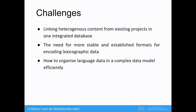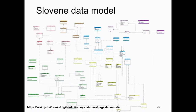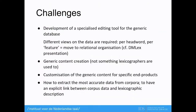It also raises the question of how to organize language data in a complex data model efficiently. Just to give you an idea of the complexity of such a model — this is the model of the Slovene digital dictionary database. It's completely unreadable. And related to that complexity, you want tools that you can use to edit the content for the generic database — that's a challenge because it's different from what traditional dictionary writing systems are aimed to do. You work per headword, you write an entry. Whereas if you are creating content for the generic database, you move more towards a task-based, feature-based editing — a different view on the data that is required.